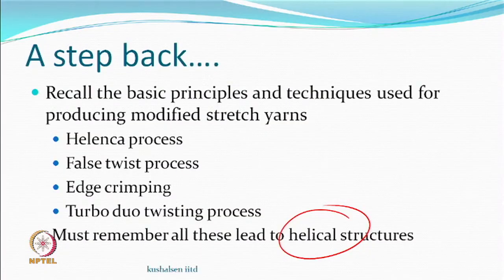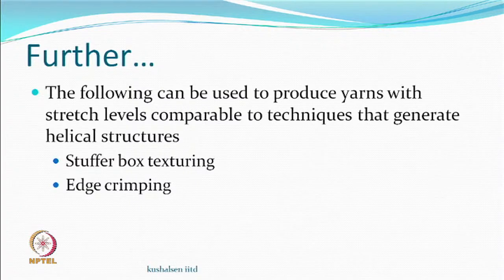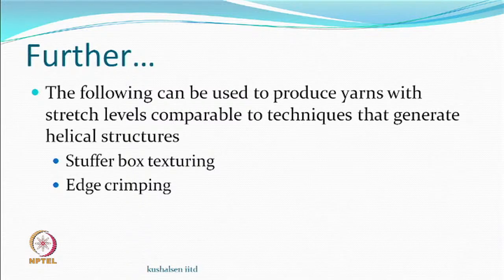Today we talk again about the principles of manufacturing textured yarns. We have seen four processes — helenka, false twist, edge crimping, and turbo duo — all of which can be used to produce modified stretch yarns, and all of them give helical structures. We also discussed that comparable stretch levels can be generated by the modified stretch methods of helical processes, as well as stuffer box texturing and edge crimping.